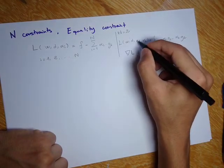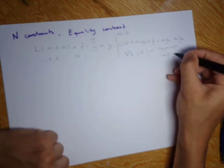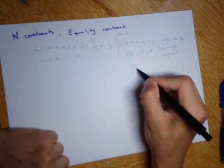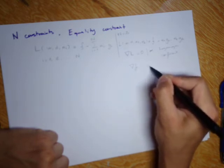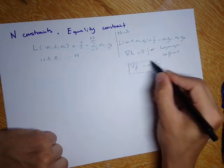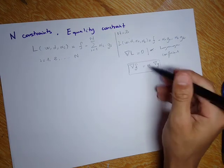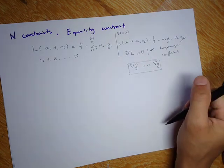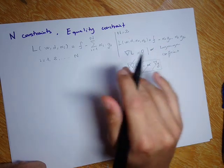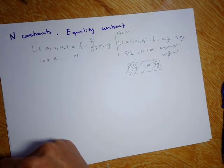If you're wondering about the meaning of alpha — the Lagrangian coefficient — it is a coefficient that relates the gradient of the function we want to optimize with the gradient of the constraint function. For more details, Khan Academy has an excellent and very clear video about it. Anyway, this was how to solve an equality-constrained optimization problem for N constraints. In the next video, I'll talk about how to do the same thing for inequality constraints.